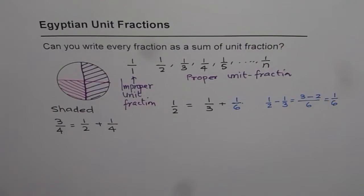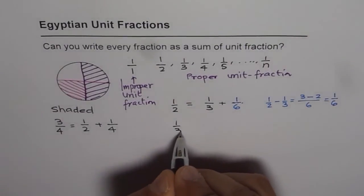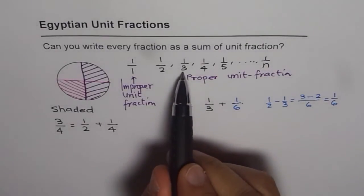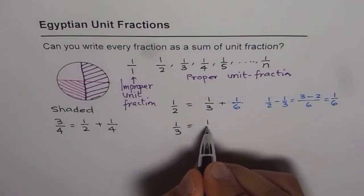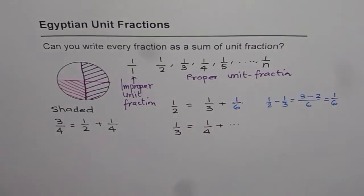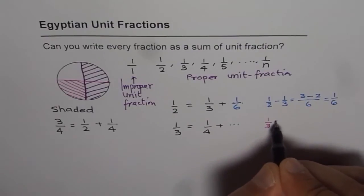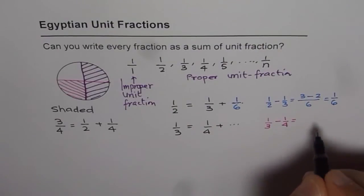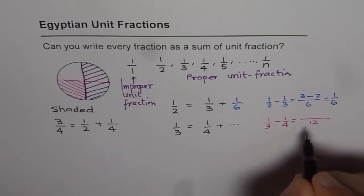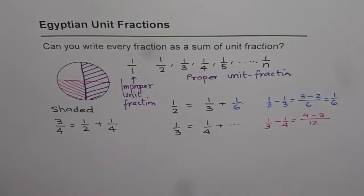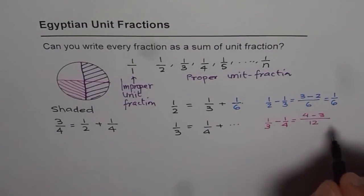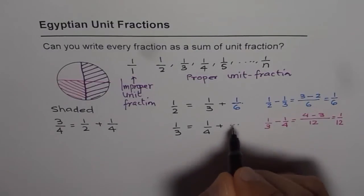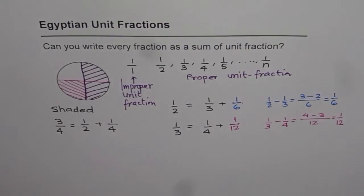Can we continue this process? Let's try with one-third. The next unit fraction below one-third is one-fourth, so one-third could be written as one-fourth plus something. That something has to be one-third minus one-fourth. Taking a common denominator of 12: 4 minus 3 over 12 gives 1 over 12. So I can write one-third as one-fourth plus one-twelfth — a combination of two unit fractions.